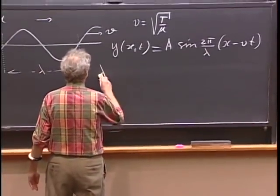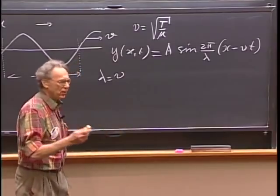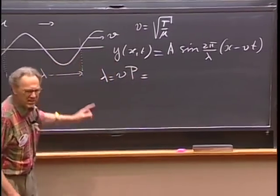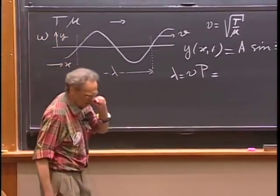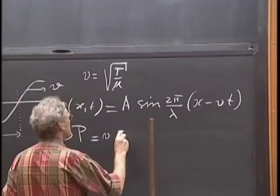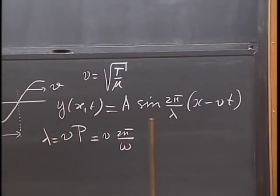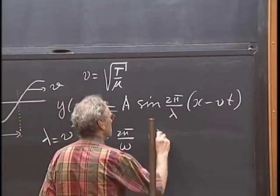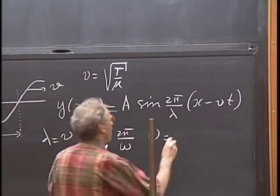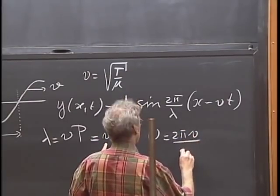Lambda is V times the period of one oscillation, for which I'll write P (not T, to avoid confusion). P is 2π/ω. So ω, my angular frequency with which I am shaking, is 2π times V divided by λ.